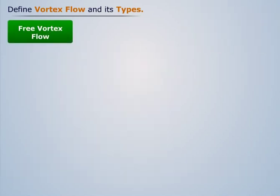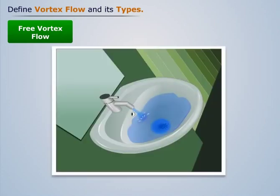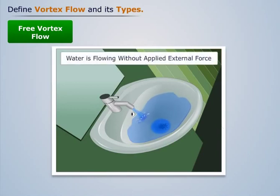Now let us understand free vortex flow. To understand free vortex flow, let us consider a wash basin. We see that when the tap is fully open, the water moves in a curved path in the basin. Such flow of water without the action of any external force is known as free vortex flow.